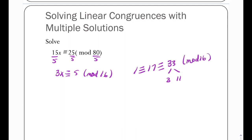mod 16, right? So I'm going to multiply by 11. I've got 33x, which is the same as 1x, congruent to 55 mod 16. Now I reduce. 33 is the same as 1.